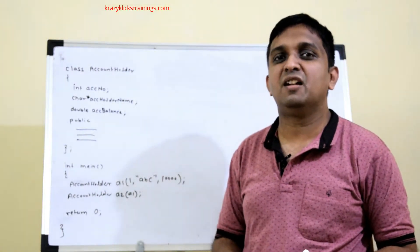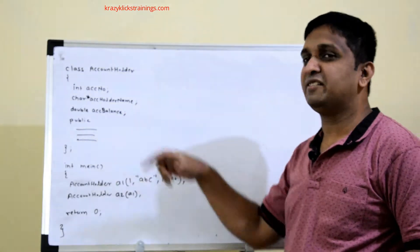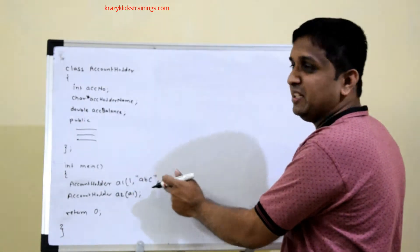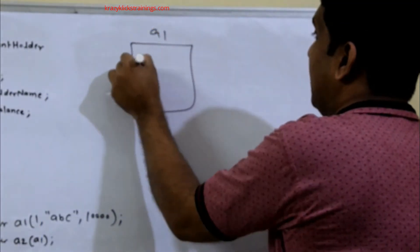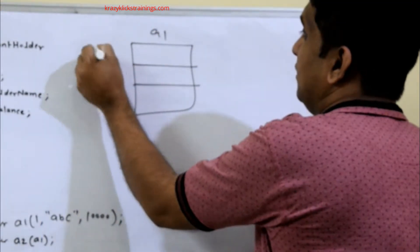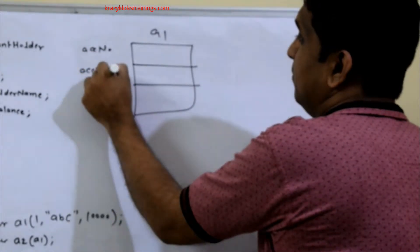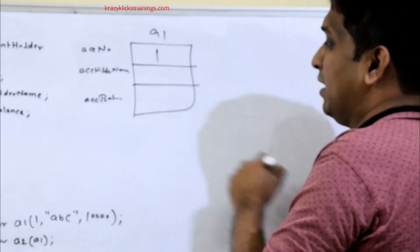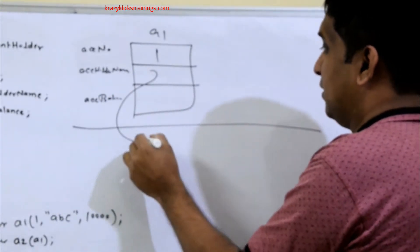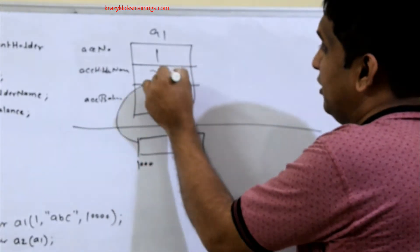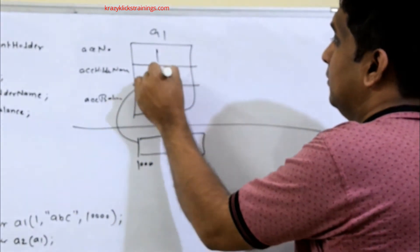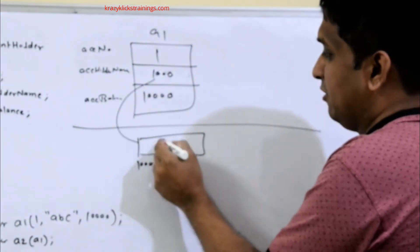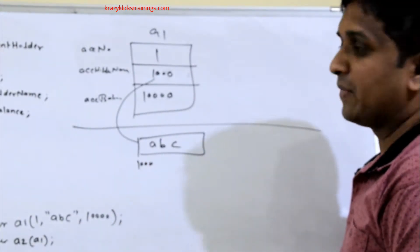We have seen the dangling pointer situation in the last video. Class AccountHolder has name taken as a character pointer. In the main function, two objects a1 and a2 are declared. a1 is initialized with values 1, abc, and 10000. For the account holder name, memory is allocated on the heap — suppose address 1000 — and the balance is 10000. This memory is initialized with the value abc.